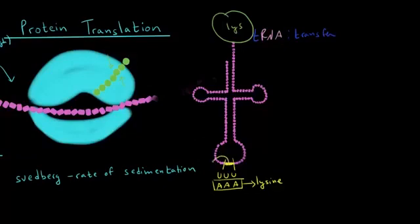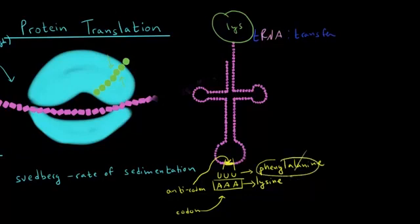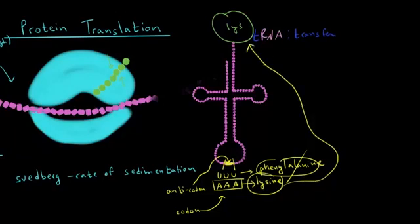The part on the tRNA molecule that determines which amino acid the tRNA molecule is going to hold is called the anticodon. Its complementary codon is, well, just a codon. The anticodon and codon are complementary to each other. Try not to get confused — the tRNA molecule does not hold the amino acid coded for by the anticodon itself. U, U, U happens to code for the amino acid phenylalanine, but this tRNA molecule does not carry phenylalanine. The tRNA carries the amino acid coded for by the codon complementary to the anticodon. So the anticodon is U, U, U; the complementary codon is A, A, A; and A, A, A codes for lysine — so this tRNA carries lysine.